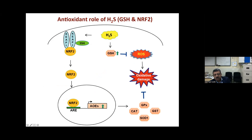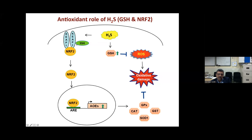Glutathione is a tripeptide with cysteine at its active site — this is the critical component H₂S protects. By saving glutathione, H₂S directly prevents oxidative stress. H₂S can also react directly with reactive oxygen species. Additionally, H₂S modifies the protein Keap1 through persulfidation. Keap1 normally binds and inactivates Nrf2, a transcription factor. When H₂S modifies Keap1, Nrf2 is freed.